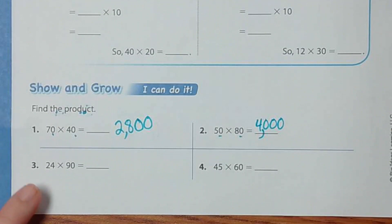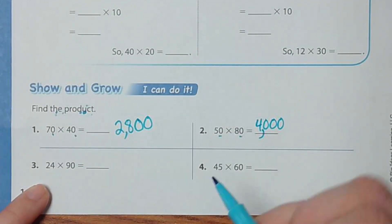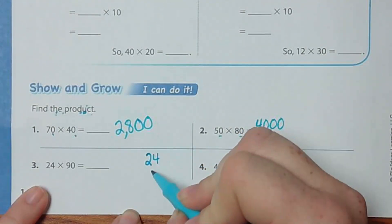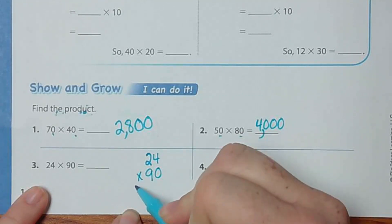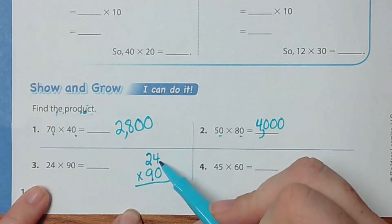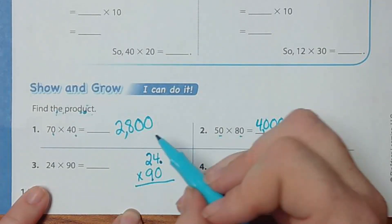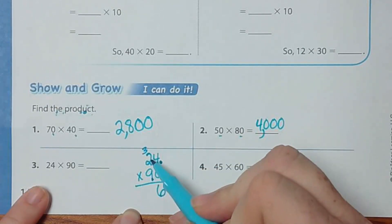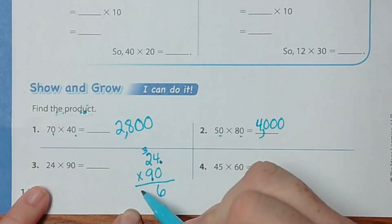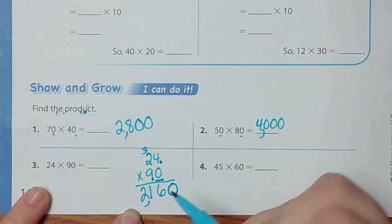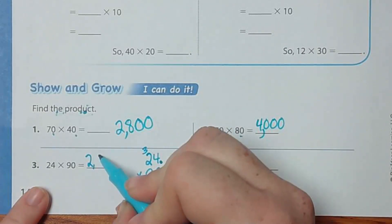This one is interesting — we're going to look at 24 times 90. I'm going to write this one out because I have two numbers to multiply. Nine times 4 is 36. Nine times 2 is 18, carrying over to get 21. There is a zero here so we're adding one zero on the end — the answer is 2160.